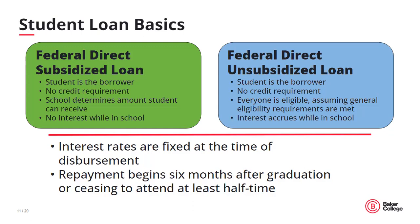The Federal Direct Stafford Loan Program offers two types of loans to student borrowers. By completing the FAFSA, students become eligible to borrow from Federal Direct Loans, so long as they meet other eligibility criteria. With both types of loans, the student is the borrower — no co-signer or credit is needed. Repayment on both loan types begins six months after graduation or when the student stops attending at least half time. The Federal Direct Subsidized Loan is based on having financial need as determined by the FAFSA.